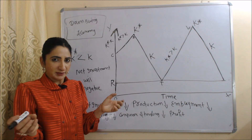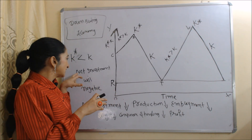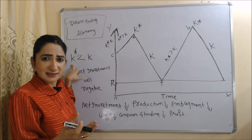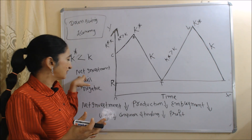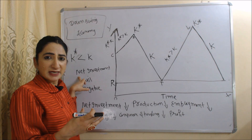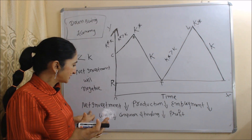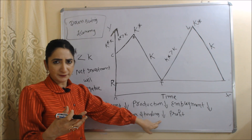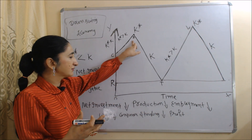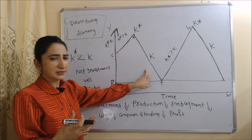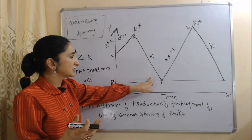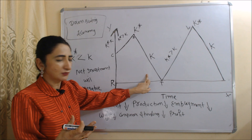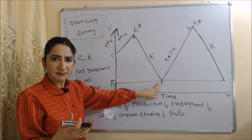Now we talk about the downswing. In the case of a downswing, K* is less than K. When K* is less than K, net investment will fall. As net investment reduces, production, employment, wages, consumer spending, and profit will also reduce, and our economy will go down. You can see from point B to point T, K* is less than K — that's why our economy is going down.